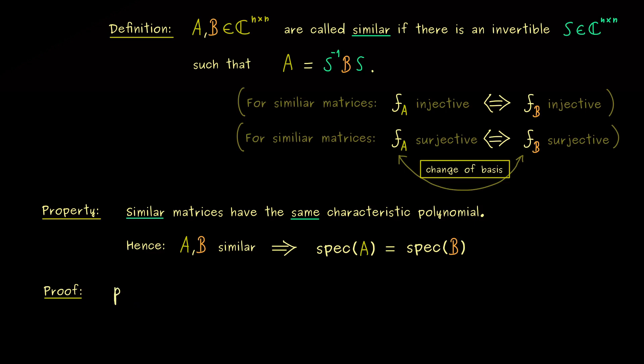And this one, you know, we have denoted by P_A. And the variable in the polynomial we choose as the complex number lambda. And by definition, this one is given by the determinant of A minus lambda identity matrix. So this is a well-defined polynomial of degree n.